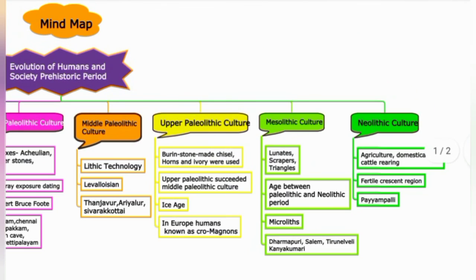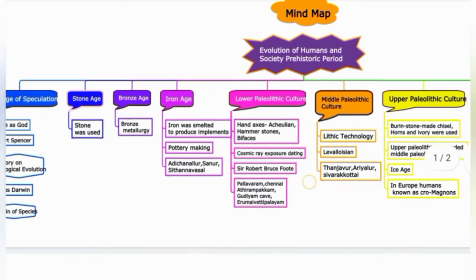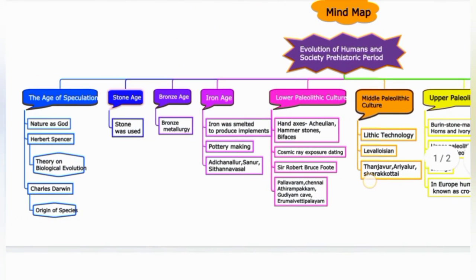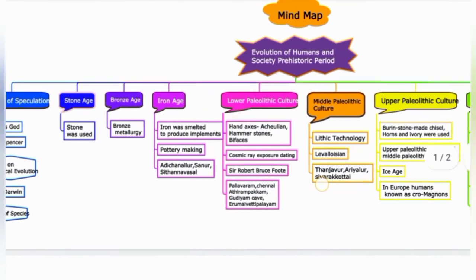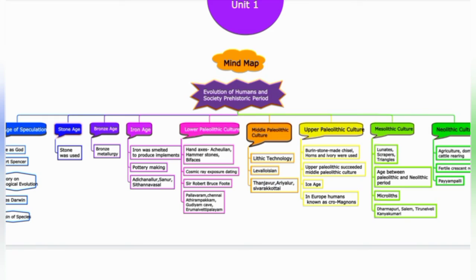This concludes the mind map of Evolution of Humans and Society, Prehistoric Period. Mind map is over. Thanks for watching.